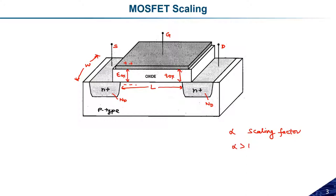Simply put, scaling means reducing the size and dimensions of a MOSFET. There are two main reasons for scaling down technology: first, all devices used in fabrication must be properly scalable so that we can adjust device density as required; and second, ideally there should be zero static power dissipation in CMOS logic circuits. These two are the important factors to consider when scaling down technology.